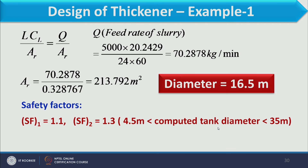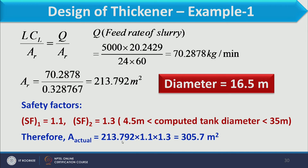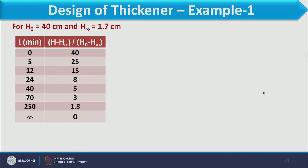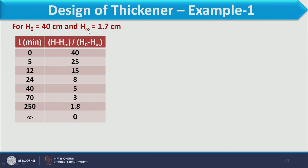Adding safety factors SF1 = 1.1 and SF2 = 1.3, since the diameter lies between 4.5 and 35 meters, the actual area is 305.7 m² and the corresponding actual diameter of the tank is calculated. For the height design, from the batch sedimentation test, H0 = 40 cm and H∞ = 1.7 cm.